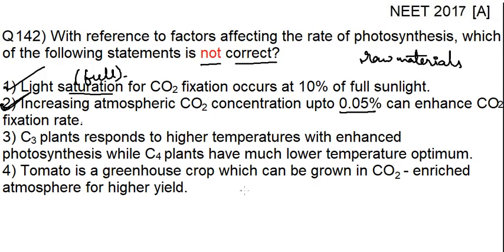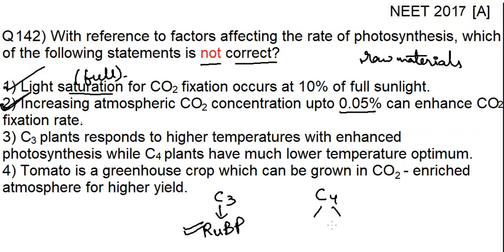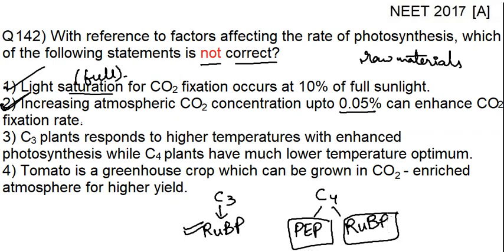For the third option, let us discuss C3 and C4 plants first. In C3 plants, photosynthesis only occurs in one place and is facilitated by the enzyme RuBP. In C4 plants, photosynthesis occurs in two places — bundle sheath cells and mesophyll cells — and two enzymes are involved: PEP (phosphoenolpyruvate) and RuBisCO. Now, 90% of angiosperms are C3 plants and the remaining 10% are C4 plants.